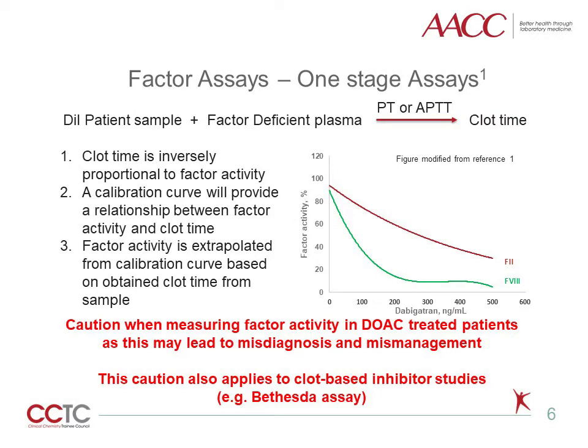The one-stage assay is the most common method used for determining factor activity. Factor-deficient plasma is added to a dilute patient sample, then either a PT or APTT is run in order to obtain a corresponding clot time. The clot time is inversely proportional to factor activity, so the shorter the clotting time, the higher the factor activity. A calibration curve with a standard of known factor activity will provide a relationship between factor activity and clot times. As DOACs may increase PT or APTT clot times, this will result in a factitiously low factor activity, as noted with increasing concentrations of dabigatran and reported factor II and factor VIII activity. So caution must be exercised when performing factor activity testing in DOAC-treated patients, as this may lead to misdiagnosis and potential mismanagement.